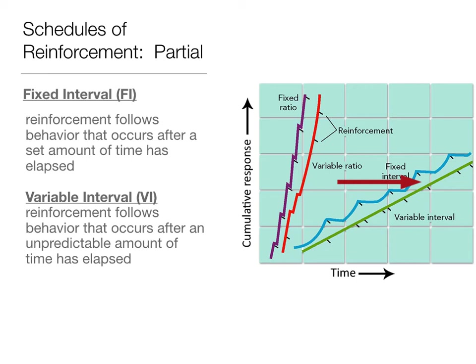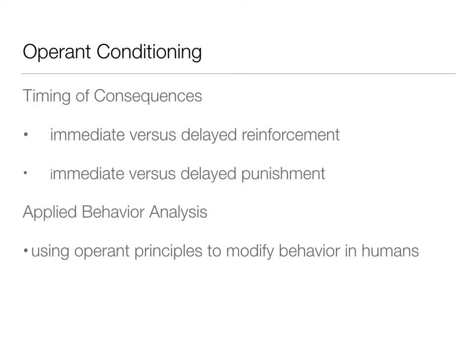The timing of consequences — whether delayed or immediate — can also influence behavior. Finally, applied behavior analysis uses these operant principles to modify behaviors in humans, used in schools, with kids, and in many different settings. Behaviorism has had a lot of really good benefits because it explains much of the way we learn. Just like classical conditioning, though, it doesn't explain all the ways we learn — see you soon to talk about observational learning, another way that we learn. Thanks so much.